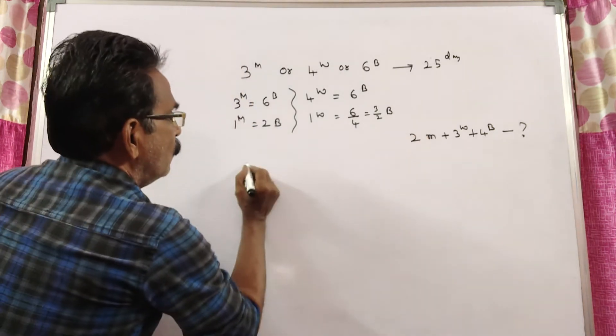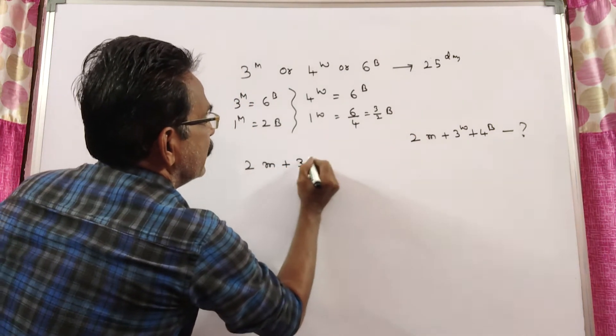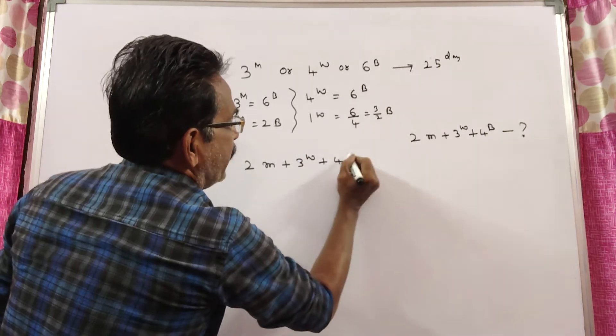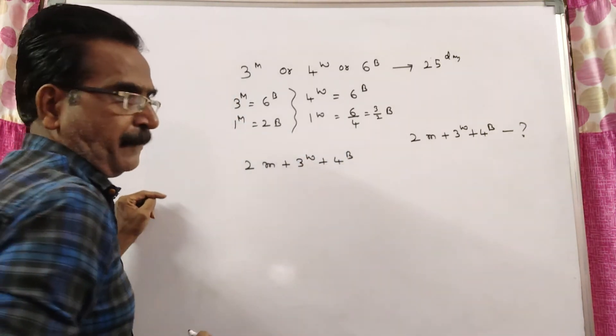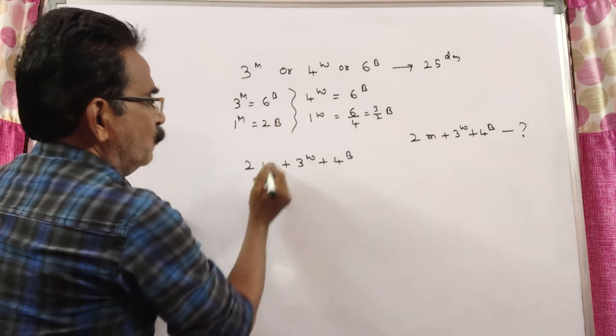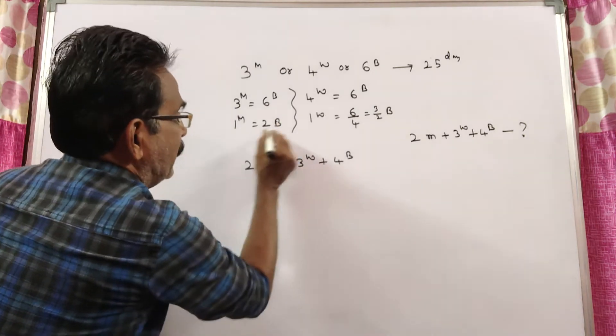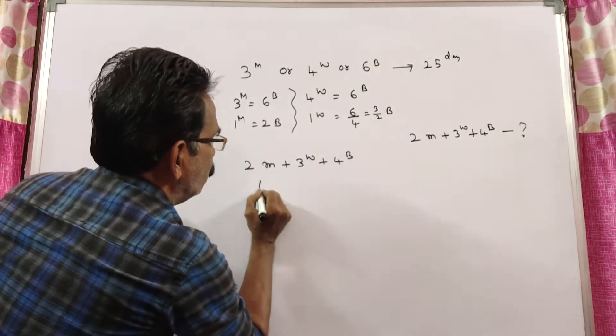So, now 2 men plus 3 women plus 4 boys is equal to how many number of boys? 1 man, 2 boys. 2 men means 1 man, 2 boys. 2 men is equal to 2, 2's, 4 boys.